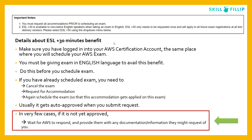In some cases, if it is not automatically approved, wait for AWS to respond and provide any documentation or information they might request. If they are taking too long to respond, you can always reach out to their helpline to raise your concerns, but this happens in very few cases.